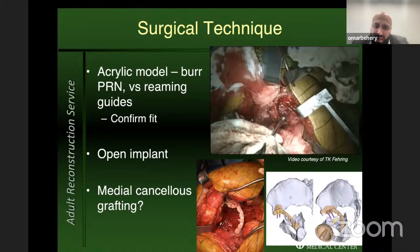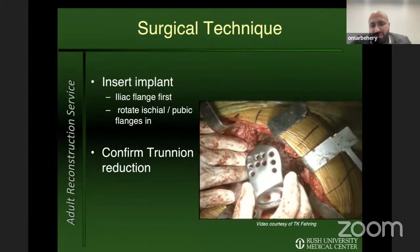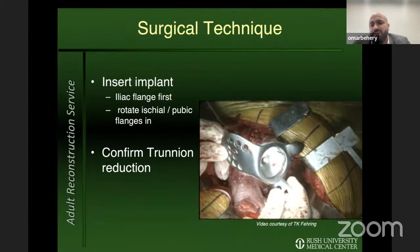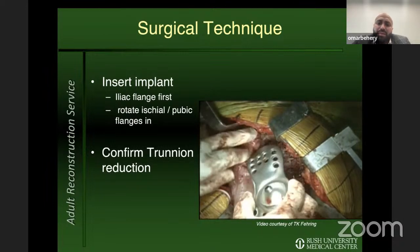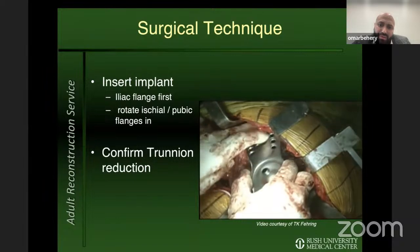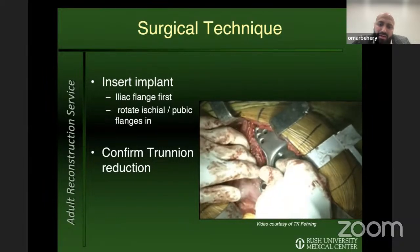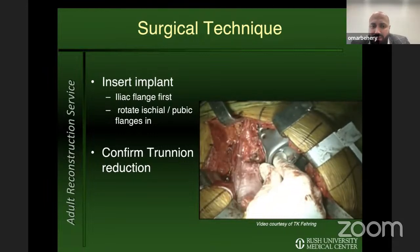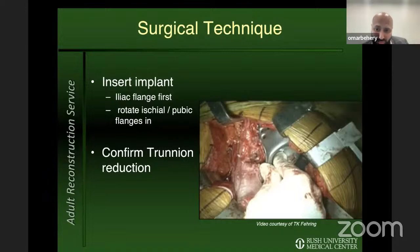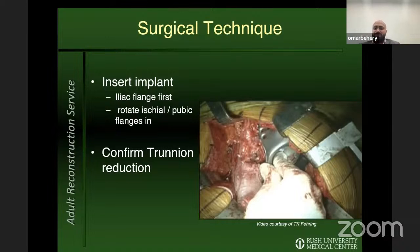Some manufacturers offer a custom reaming guide instead of the burring technique to more efficiently prepare the cavity for the custom implant. In the insertion video shown here from a posterolateral approach, the iliac flange is inserted underneath the abductors and the ischial flange is rotated in until it rests in the appropriate position, as is the pubic flange. At this point, confirm that you can get within striking range with the trunnion and potentially achieve reduction — if not, this signals how much more releasing of soft tissue structures like the iliopsoas is needed.